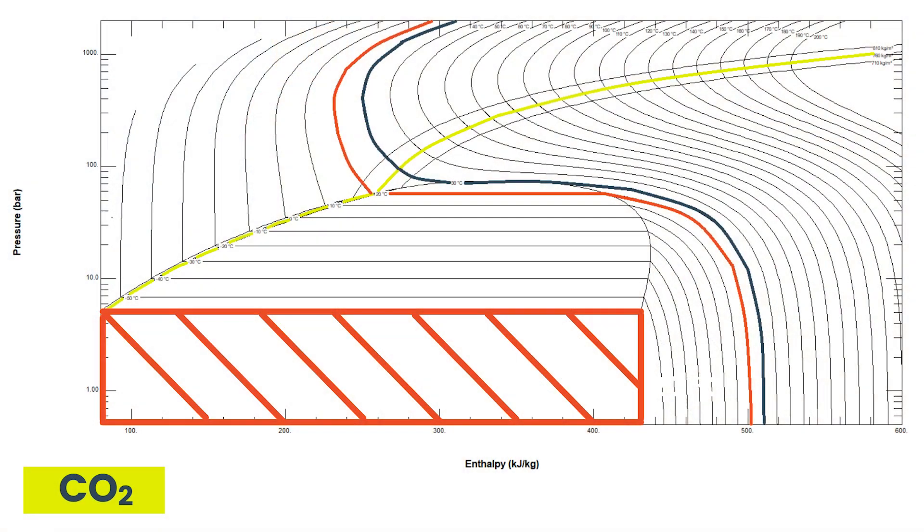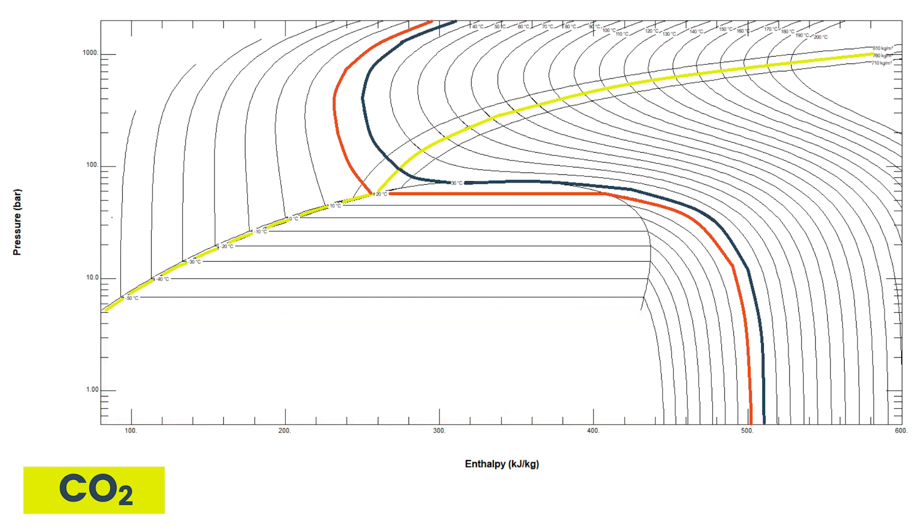This is also the reason why we are missing all of this data at the bottom of our pressure enthalpy chart. This program does not provide any data for solid vapor equilibria. This is also why we couldn't really predict what the end temperature would be.